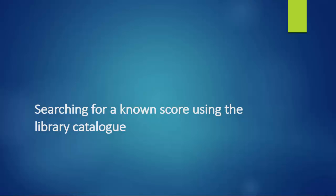In the next part of this video, we'll walk you through the steps for using the library catalog to search for a known score. In this example, we're going to search for the Italian Concerto by Johann Sebastian Bach, and we're going to see how many copies there are in the Education and Music Library.